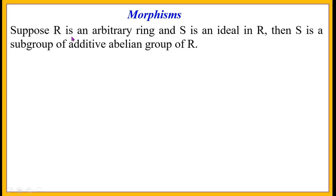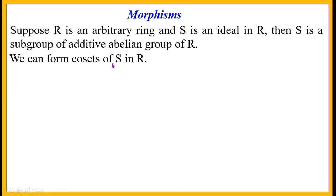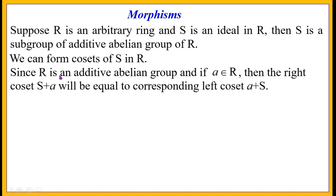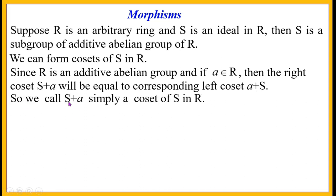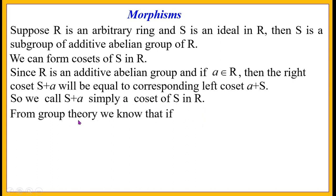Morphisms. Suppose R is an arbitrary ring and S is an ideal in R, then S is a subgroup of the additive abelian group of R. We can form cosets of S in R. Since R is an additive abelian group and if A belongs to R, the right coset S plus A equals the corresponding left coset A plus S. So we call S plus A simply a coset of S in R.